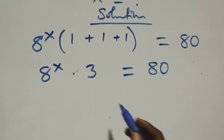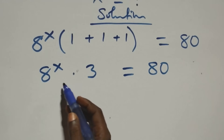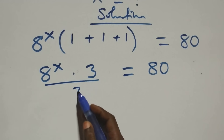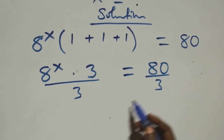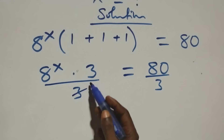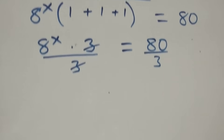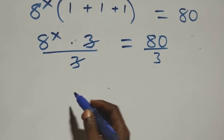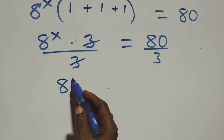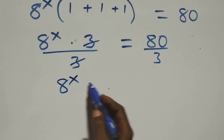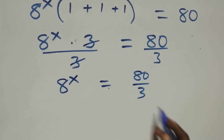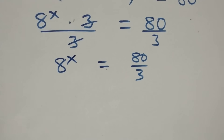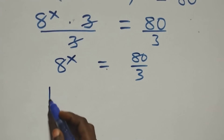The next step: we divide both sides by three. That is, we divide this side by three and also divide the other side by three. The threes cancel each other and we are left with a raised to power x equals 80 over 3.